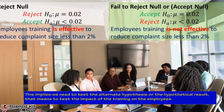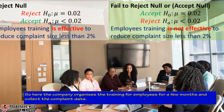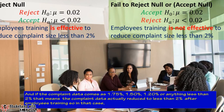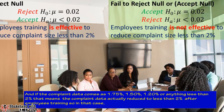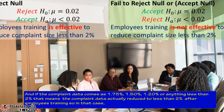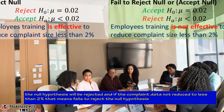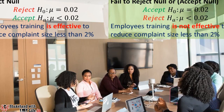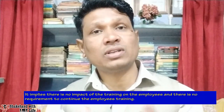To test the alternate hypothesis — that is, the impact of training — the company organizes employee training for a few months and collects complaint data. If the complaint data comes in at 1.75%, 1.50%, 1.20%, or anything less than 2%, then the null hypothesis is rejected, confirming training was effective. If complaints do not reduce below 2%, we fail to reject the null hypothesis, implying the training had no impact and does not need to continue.